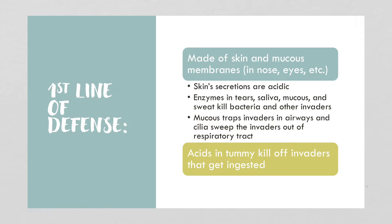The first line of defense is made of our skin and mucus membranes — the linings of your nose, eyes, airways, and so on. Skin secretions are acidic to ward off invaders. Enzymes in our tears and saliva, mucus, and sweat also kill bacteria and other invaders. Mucus traps invaders in our airways and cilia sweep them out. Stomach acid at around pH 2 kills ingested invaders, so you can sometimes eat contaminated food and not get sick because this first line of defense was successful.